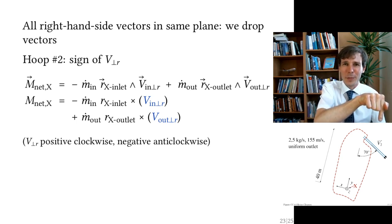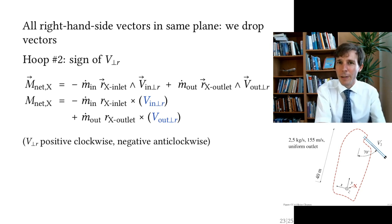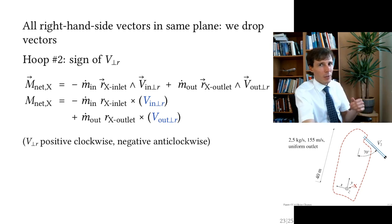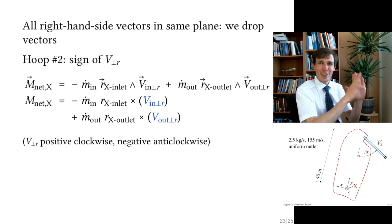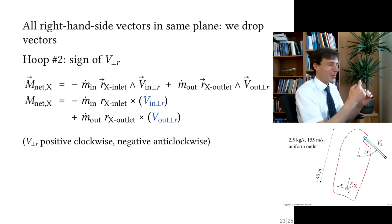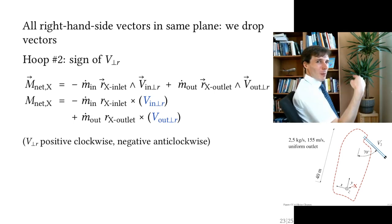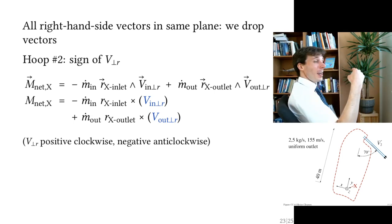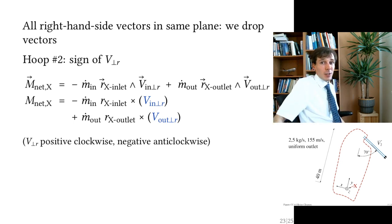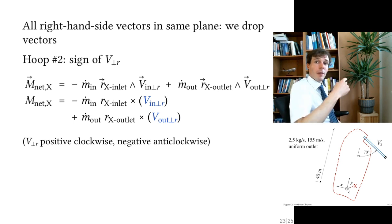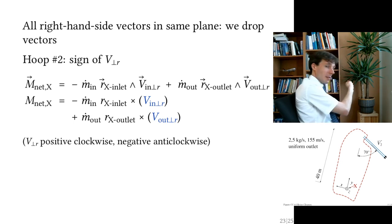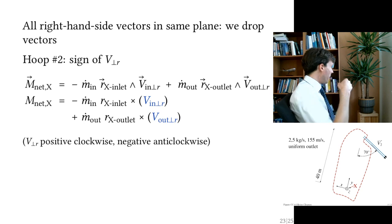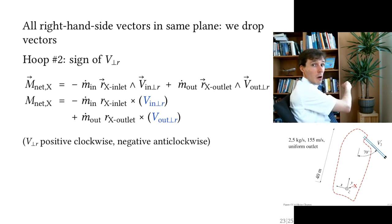v_⊥,out in our case is v₂, pointing upward. Looking in the positive z-direction, v₂ at the tip of r is rotating clockwise, so it is a positive number — it points in the positive z-direction.